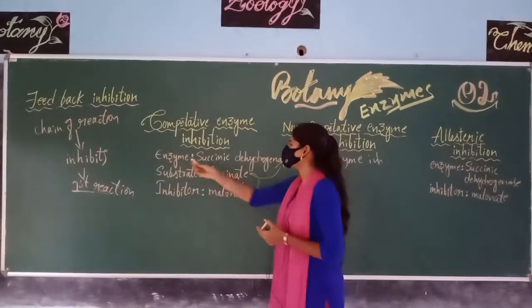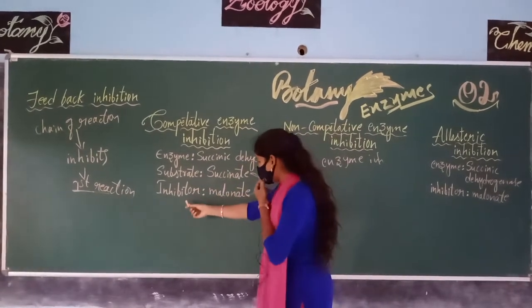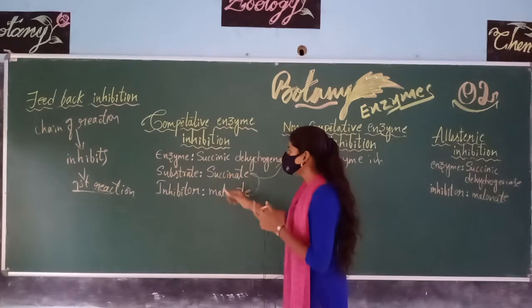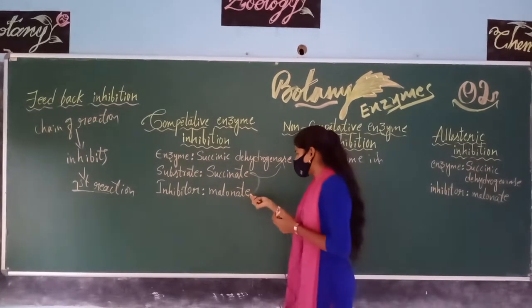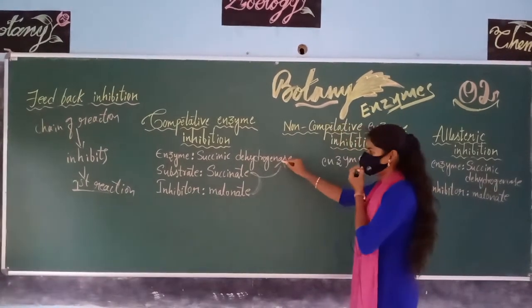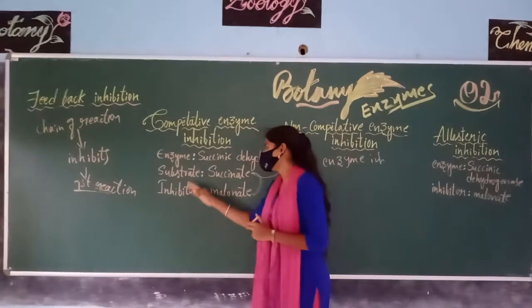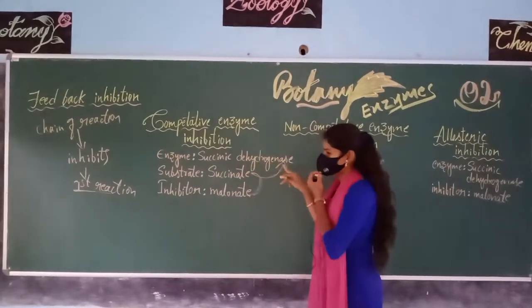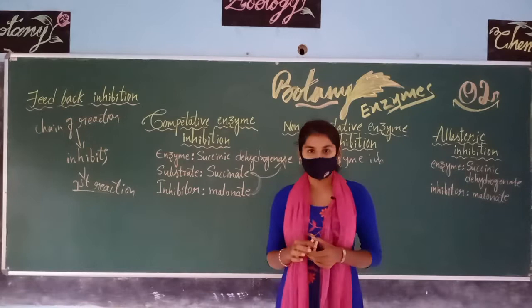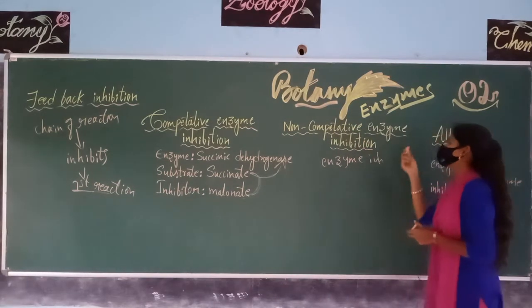For example, consider the enzyme succinic dehydrogenase, where the substrate is succinate and the inhibitor is malonate. The inhibitor malonate is structurally very similar to the substrate succinate, and malonate competes with succinate to bind with the active site of succinic dehydrogenase, terminating or inhibiting the enzyme's activity. This process is called competitive enzyme inhibition.